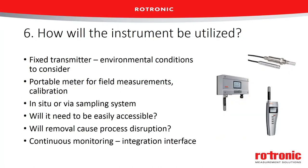Number six: how will the instrument be utilized? This may seem straightforward but it's not. Will it be a fixed transmitter? Think about the environment where the transmitter and its electronics will be stored. For example, if you're measuring in Antarctica and you have a fixed transmitter with an LCD display outside at minus 40 degrees, that LCD is not going to work. Will you need to take the instrument to different places, requiring a portable instrument? Will you need to measure in situ inside your process or compressed air system, or take a sample off-site? That requires different fittings, instruments, and probes.